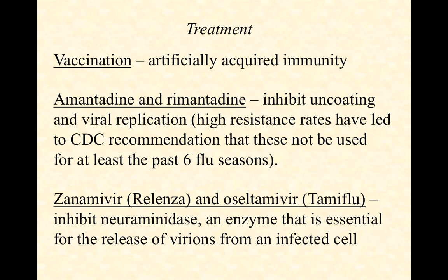The category still functioning well is neuraminidase inhibitors: zanamivir and oseltamivir. If we can knock out neuraminidase, we can stop the virus's ability to spread. There may be some initial infection, but we can stop it very quickly. You've heard of Tamiflu — lots of commercials these days. Tamiflu is one of these neuraminidase inhibitors; it knocks out neuraminidase and stops the spread of the virus.